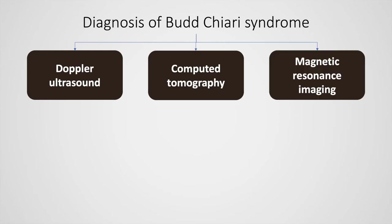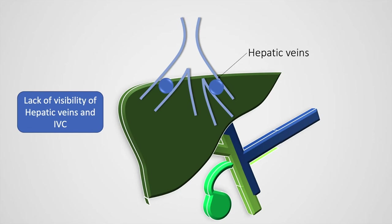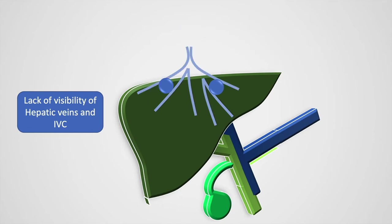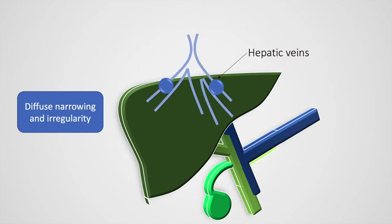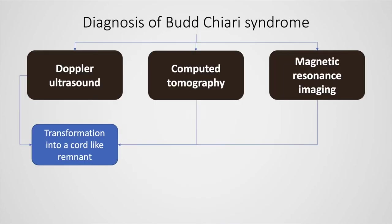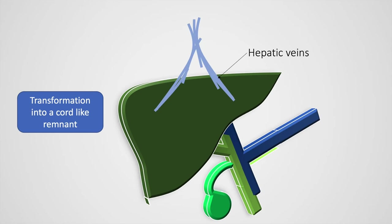The diagnosis of Budd-Chiari syndrome includes Doppler ultrasound, CT, and MRI, although all modalities are very infrequently required together. Imaging findings may include lack of visibility of the hepatic veins and terminal IVC due to obstruction. There may also be upstream dilatation due to complete or partial obstruction, as well as diffuse narrowing and irregularity of the hepatic veins and surrounding structures, or transformation into a cord-like remnant.